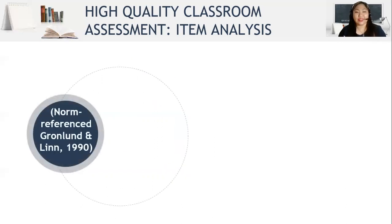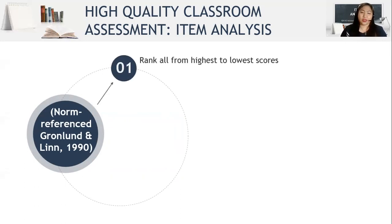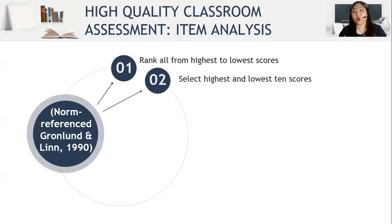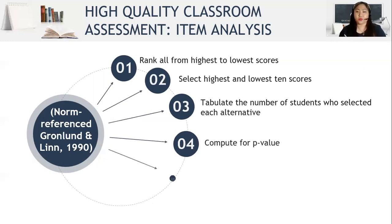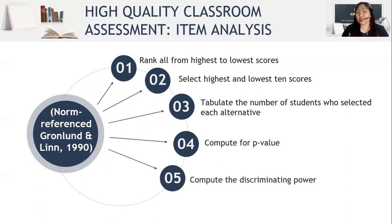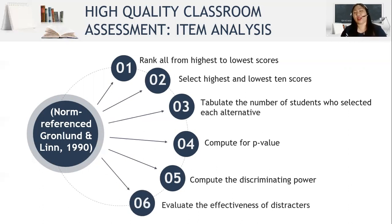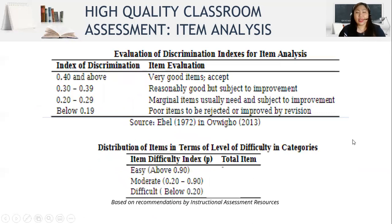For the norm-referenced method, Ronland and Ned laid down the steps: first, rank all students from highest to lowest scores; next, select the highest and lowest 10 scores; then tabulate the number of students who selected each alternative; compute the p-value or difficulty index; compute the discriminating power; and evaluate the effectiveness. This is similar to the first method, but Ronland and Ned only selected the highest and lowest 10 scores. Once we get the numbers, we have to interpret them.